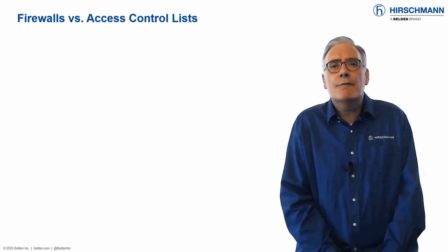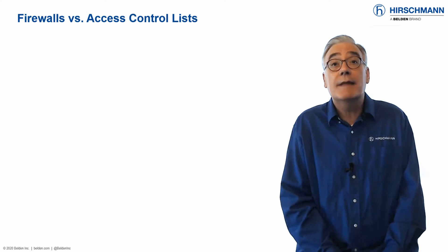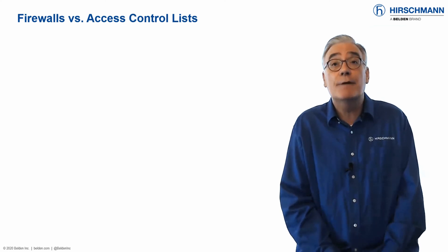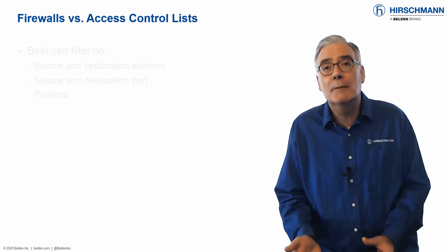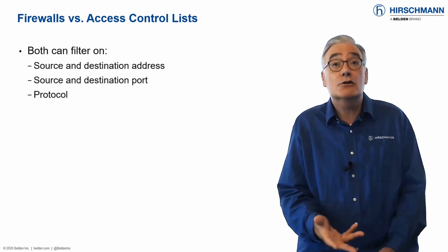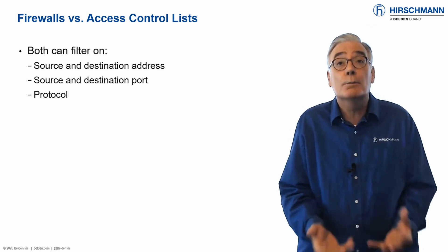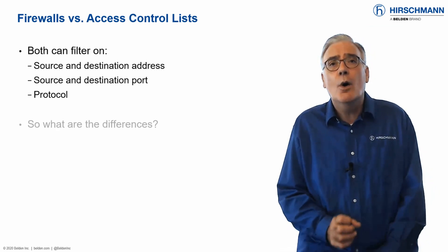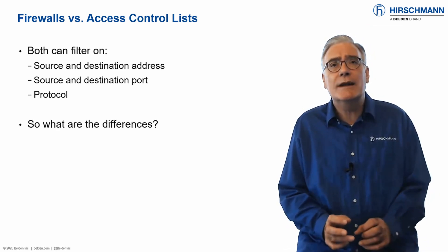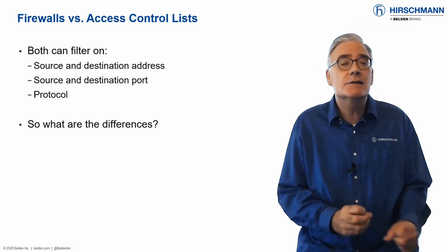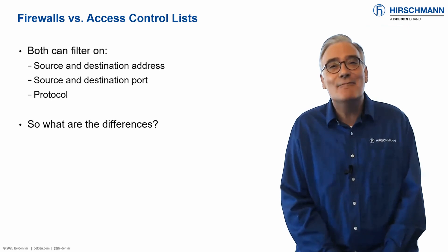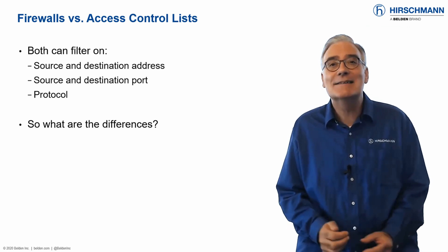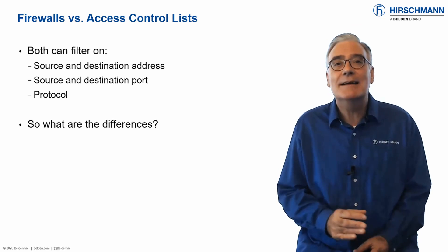If you are familiar with firewalls, then you will recognize that firewall rules and access control lists have a lot in common — for example, filtering on addresses or protocols. So what are the differences between firewalls and switches supporting ACLs? This is not a black and white topic, and there are many opinions. Let's examine some basics.